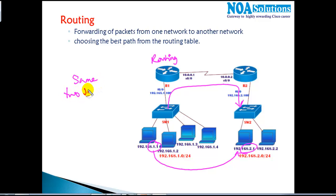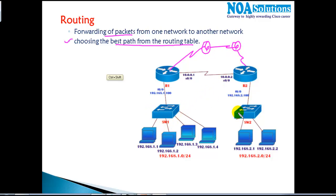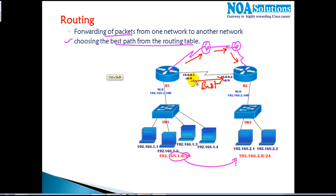If you want to communicate between two or more different networks, routing is mandatory. The router is going to forward the packet by choosing the best path from the routing table. For example, from the one-dot network to the two-dot network we have two possible routes — one direct route and one via another path — and the router is going to select the best route and forward the packet.